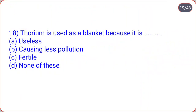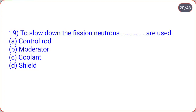Thorium is used as a blanket because it is fertile. The next: to slow down the fission neutrons, dot-dot are used. Options are control rod, moderator, coolant, shield. Correct option is moderator, option B.